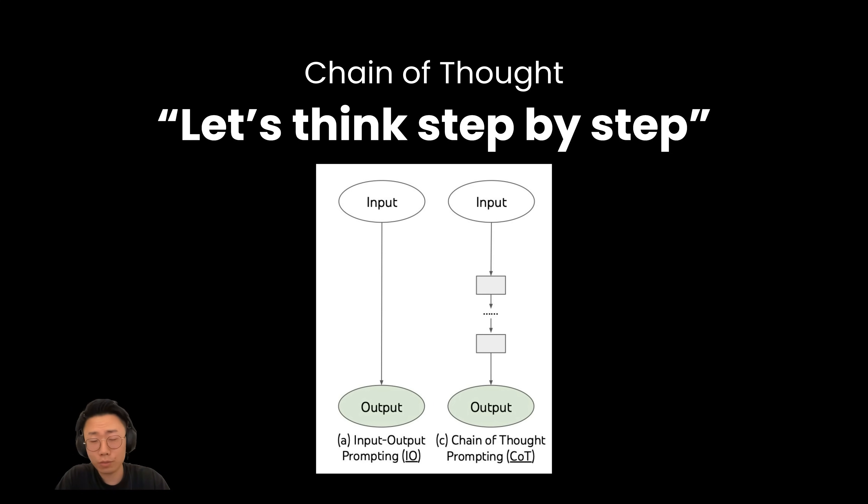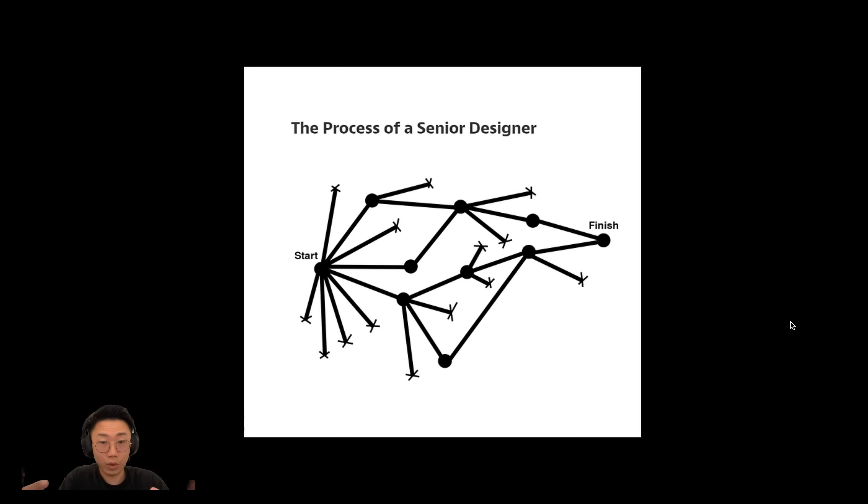But the downside is also pretty clear because this chain of thought prompting only gets the large language model to consider one possibility. But as humans, when we try to do creative problem solving, it is very common that we will explore more than just one path or one solution.